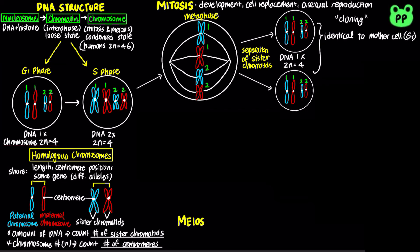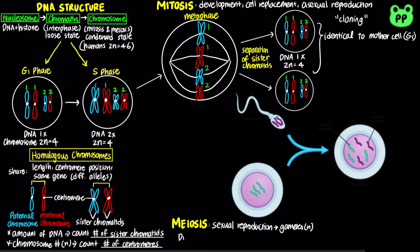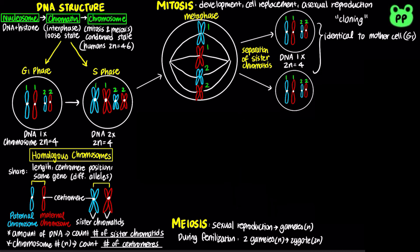On the other hand, meiosis is important for sexual reproduction, with the goal to create genetically distinct haploid gametes to increase genetic diversity. During fertilization, two haploid gametes fuse to create a diploid zygote, which will eventually develop into a new individual. Therefore, meiosis is a much more complicated process compared to mitosis.